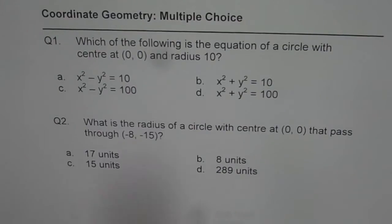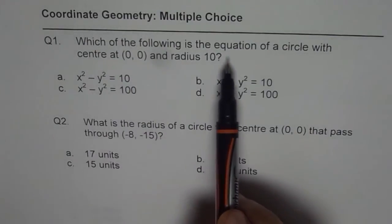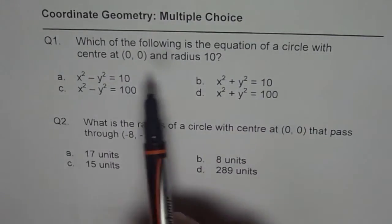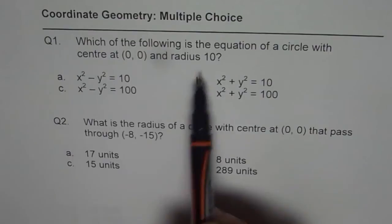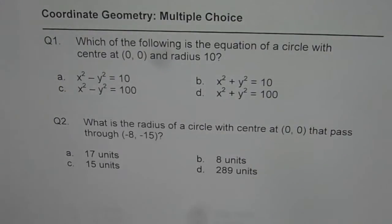Question number 1 here is, which of the following is the equation of a circle with center 0, 0 and radius 10? So four choices are given to us. You can pause the video, copy the question and then answer.